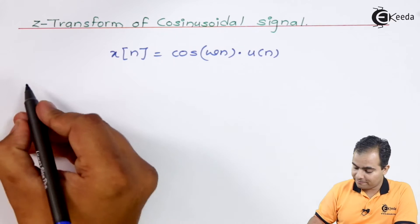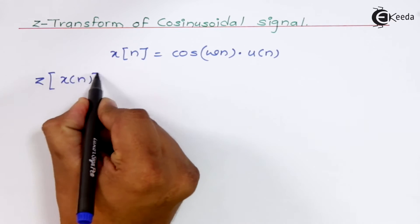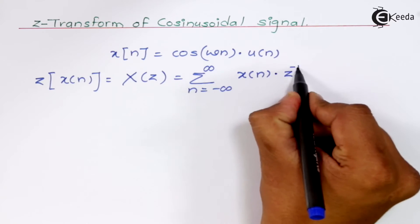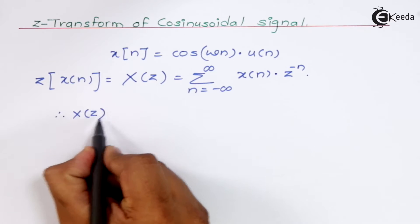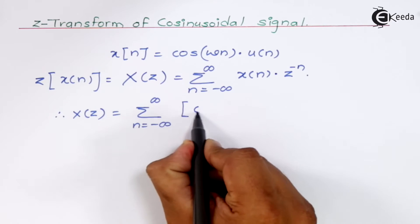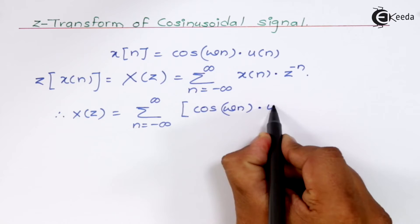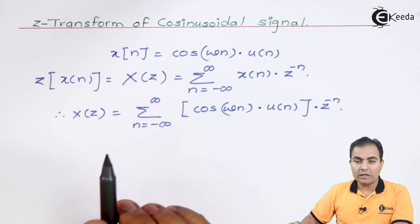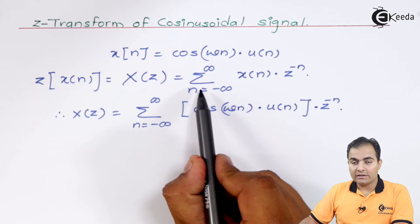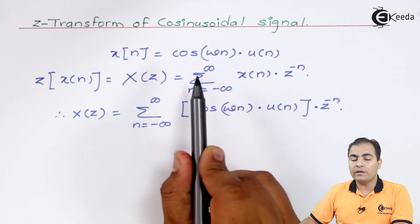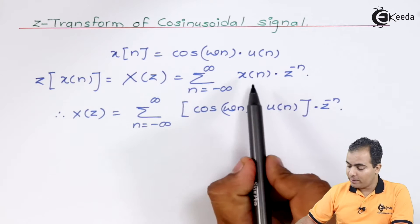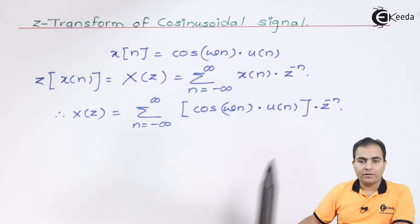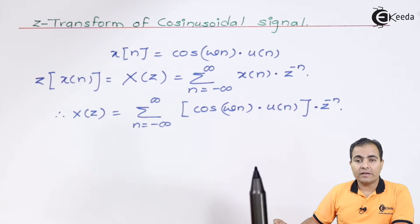We will find out the Z-transform of this cosine wave. According to the definition, the Z-transform of x(n) is represented by X(z), defined as the summation from n equals minus infinity to infinity of x(n) · z to the power of minus n. My x(n) is cos(ωn) · u(n), which I have substituted here, multiplied by z to the power of minus n.